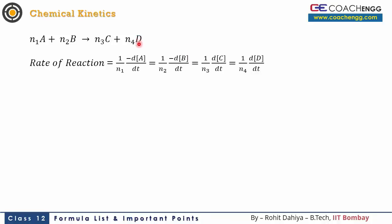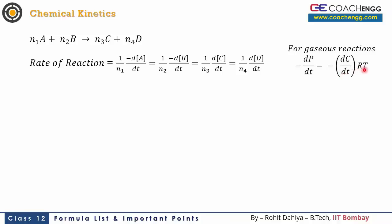Additionally, if gaseous reactants and products are given, we can use change of pressure instead of concentration: −dP/dt = −dC/dt × RT, derived from the ideal gas equation PV = nRT, where P denotes pressure and C denotes concentration. So the rate of change of pressure of a gaseous substance is proportional to the rate of change of its molar concentration.